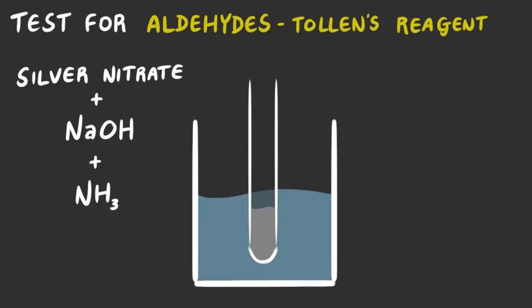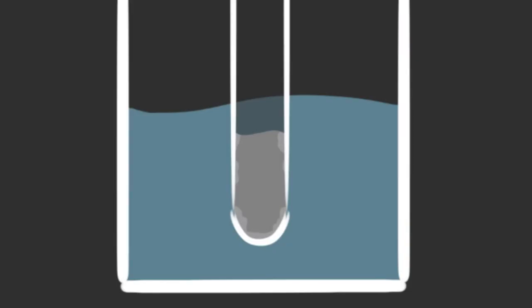Add your unknown organic compound and heat in a water bath for a few minutes. If your solution contains an aldehyde, a silver precipitate will form, and it may look like a silver mirror.